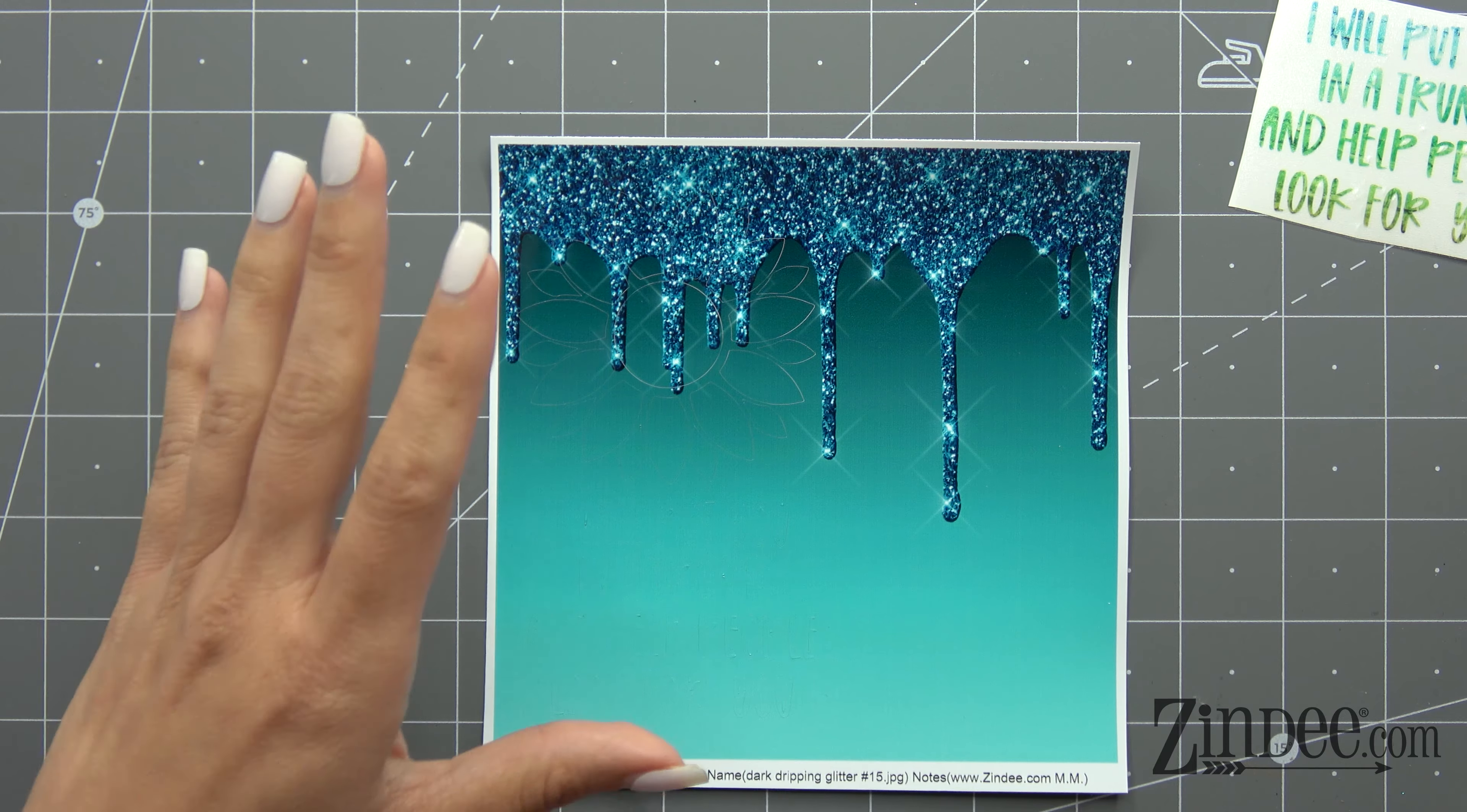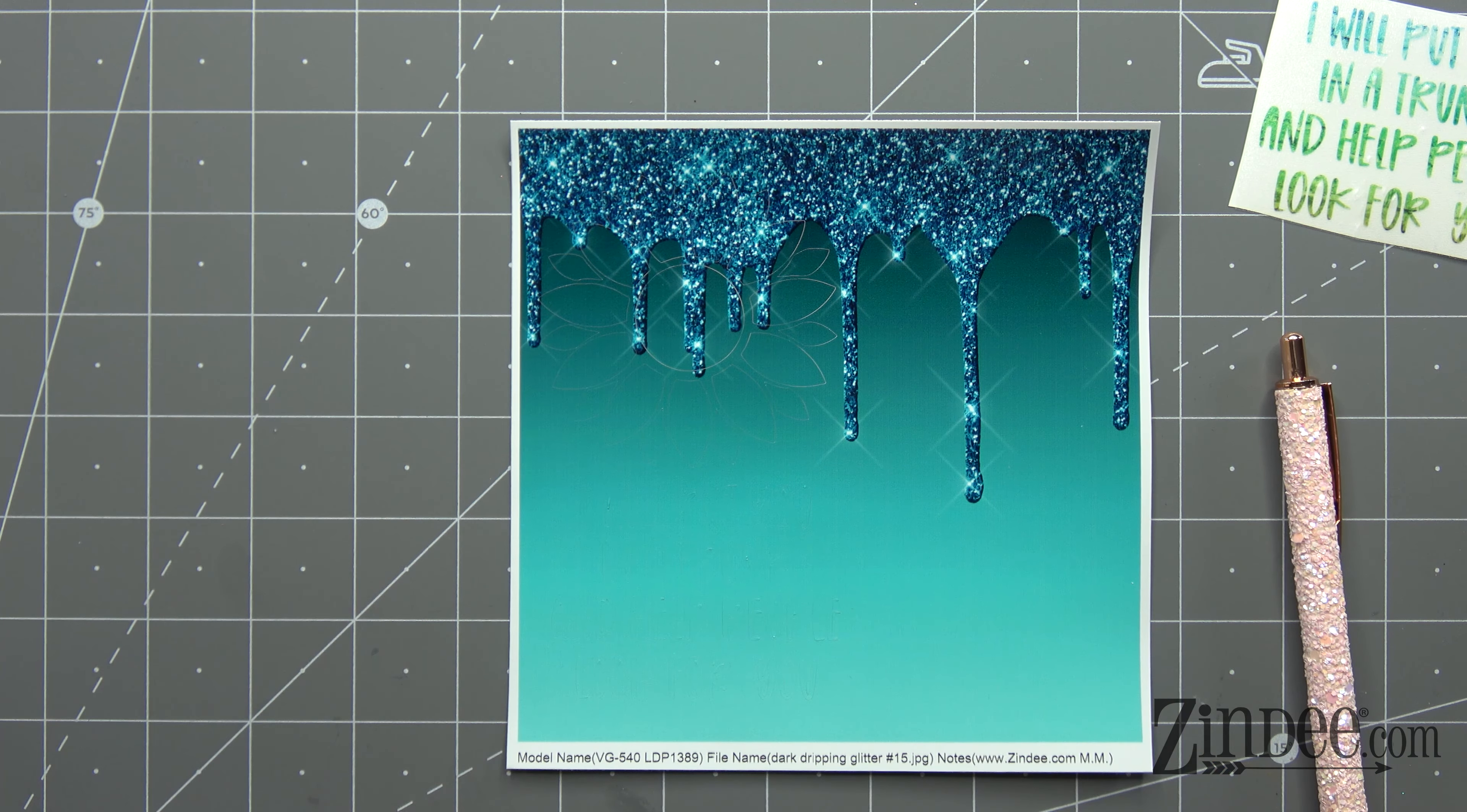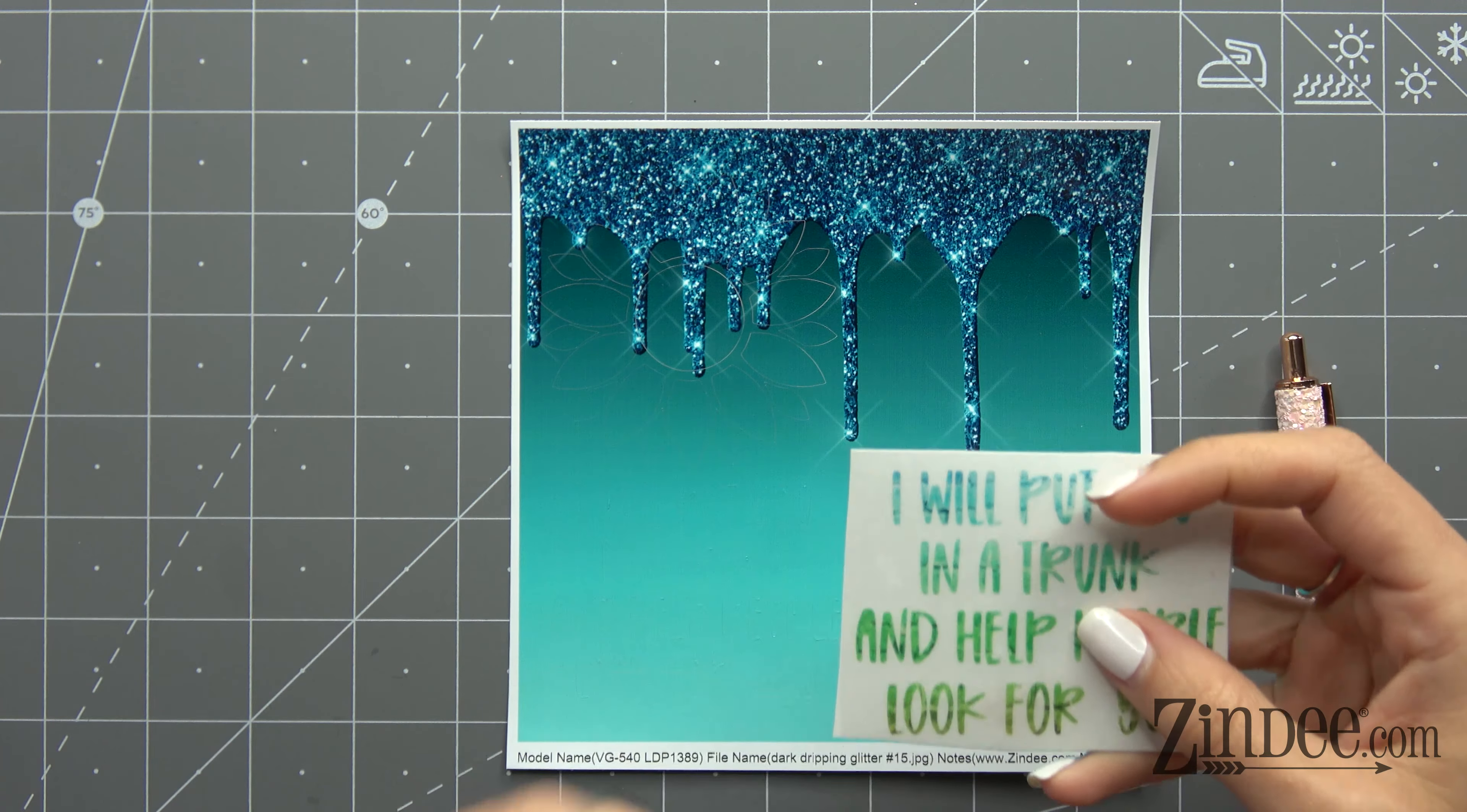So you've probably heard many people talk about reverse weeding. You're probably thinking, what the heck is that and how can it help me? Basically, reverse weeding - I'm going to show you how to do it - is very good for weeding things that are intricate or detailed.